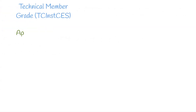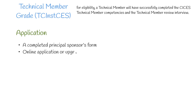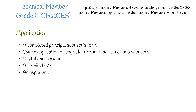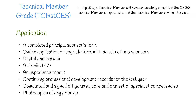Next we have Technical Member, which includes a designation. For eligibility, a technical member will have successfully completed the CICES technical member competencies and the technical member review interview. To apply, the application must include a completed principal sponsors form, an online application or upgrade form with details of two sponsors, a digital photograph, a detailed CV, an experience report, continuing professional development records for the last year, completed and signed-off general, core and one set of specialist competencies, photocopies of any prior qualifications, and the appropriate fee.